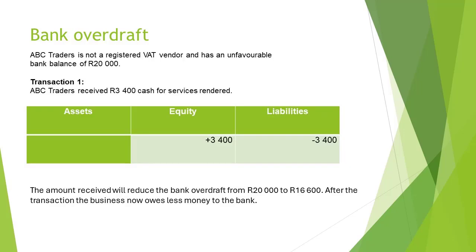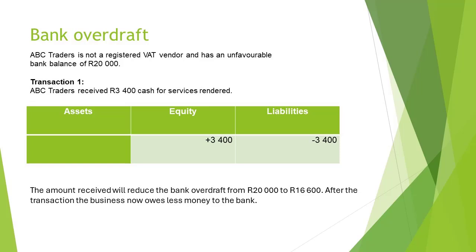Let's look at an example of how transactions are treated on the accounting equation when dealing with a bank overdraft. ABC Traders is not a registered VAT vendor and has an unfavorable bank balance of 20,000 Rand. ABC Traders received 3,400 Rand cash for services rendered.